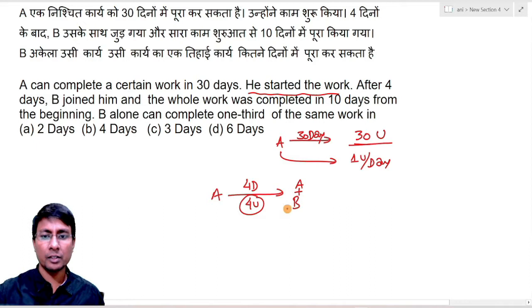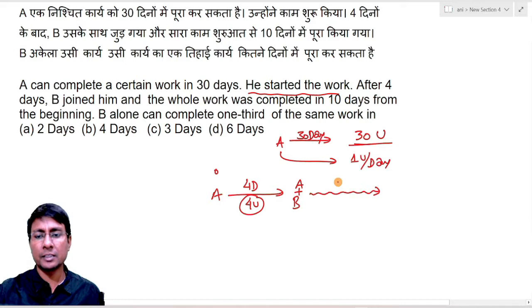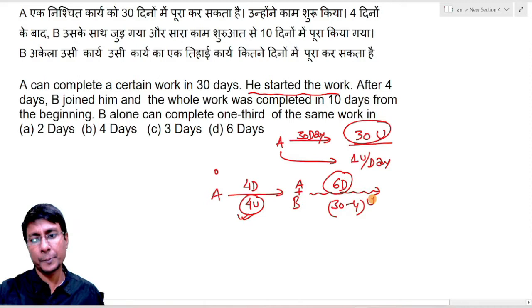Information given is that the total work is completed in ten days from the beginning. This means they worked together for six more days. And in six days how much work will they do? Total work was 30 units. Out of that, A already completed four units. It means in six days A and B together will do 30 minus four units, which equals 26 units.